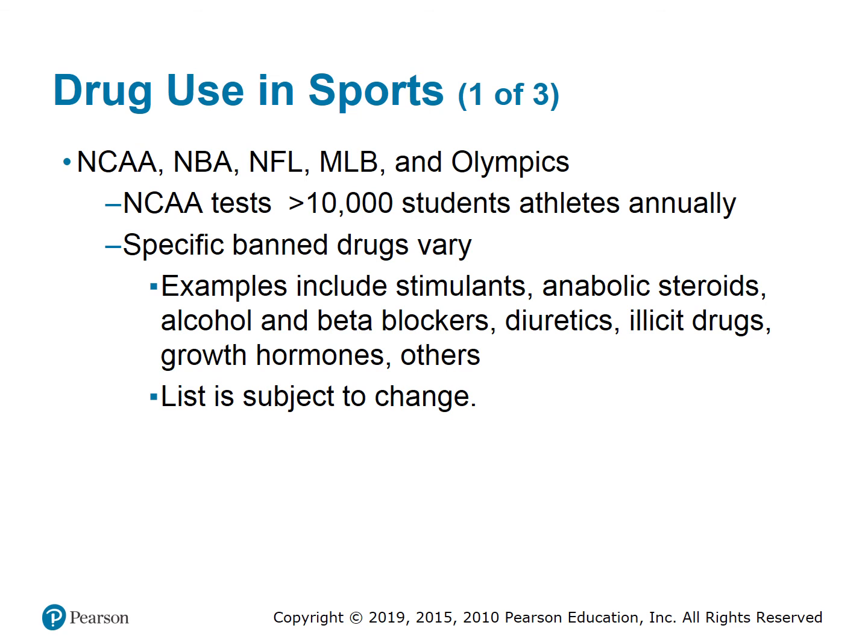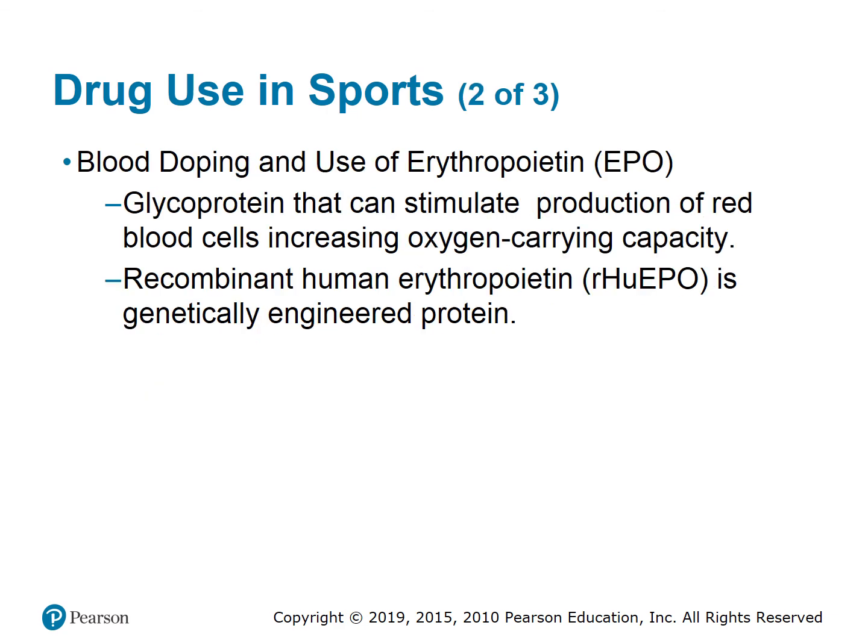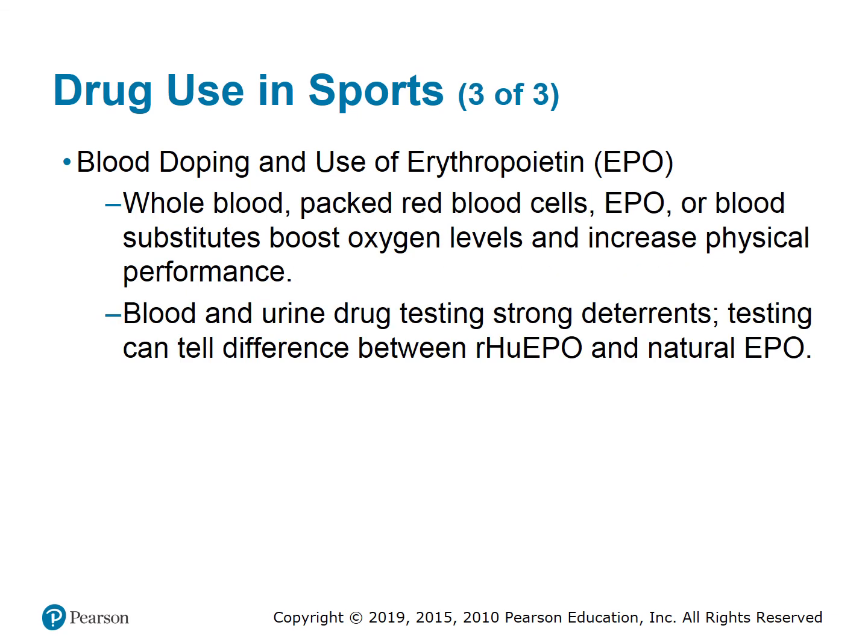Drug use in sports: the NCAA tests greater than 10,000 student athletes annually. Specifically banned drugs vary and include stimulants, anabolic steroids, alcohol and beta blockers, diuretics, illicit drugs, growth hormones, and others — the list is subject to change. Blood doping involves the use of erythropoietin, a glycoprotein that can stimulate production of red blood cells, increasing oxygen-carrying capacity. Recombinant human erythropoietin is a genetically engineered protein. Whole blood, packed red blood cells, or blood substitutes can boost oxygen levels and increase physical performance.